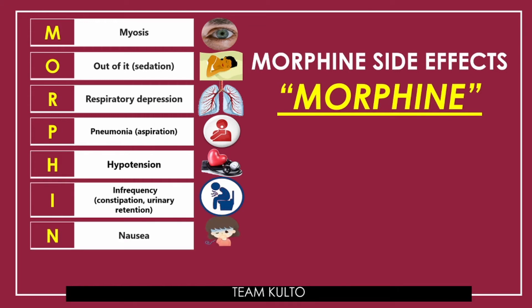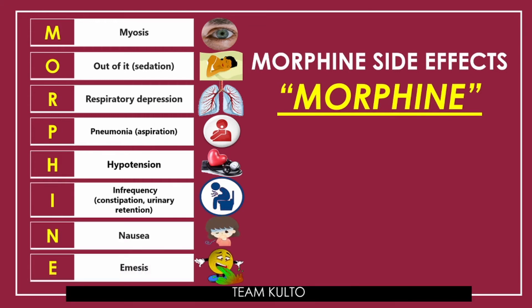N for nausea. And E for emesis — the actual process of vomiting. So once again, these are your mnemonics for the side effects of morphine: M — miosis, O — out of it or sedation, R — respiratory depression, P — pneumonia or aspiration, H — hypotension, I — infrequency, constipation, urinary retention, N — nausea, E — emesis.